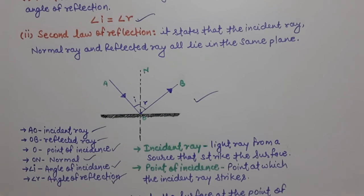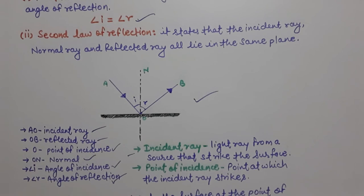Now I am going to summarize the content we studied in the laws of reflection. Incident ray: the light ray from a source that strikes the surface — a beam of light from any source that strikes a surface is known as the incident ray. Point of incidence: the point where the incident ray strikes the surface is called the point of incidence.